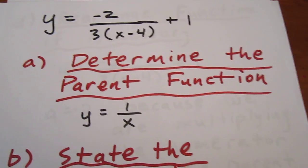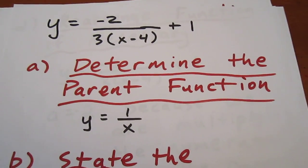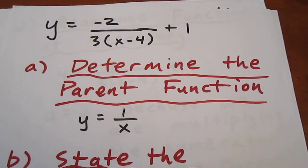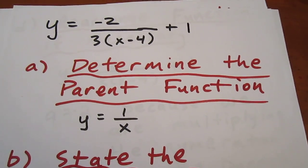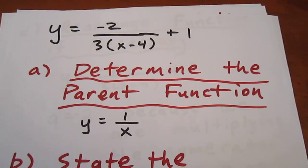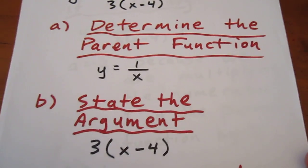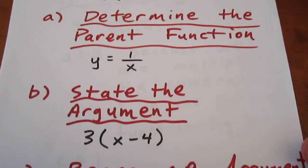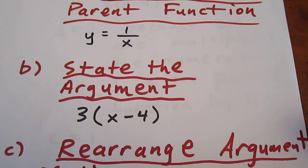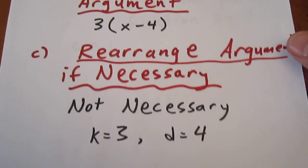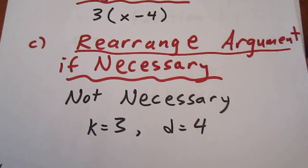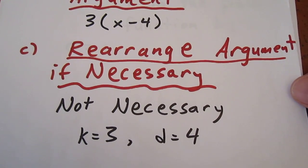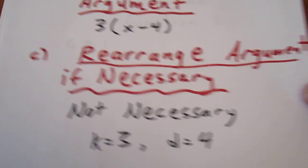We start with the curve itself and we want to know the parent function. In this case, the parent function is y equals 1 over x, since we have x in the denominator. We're then going to state the argument — the denominator in this case is the argument, so it is 3 bracket x minus 4. Rearranging the argument is not necessary here; it was already factored for us, so k equals 3 and d equals 4.